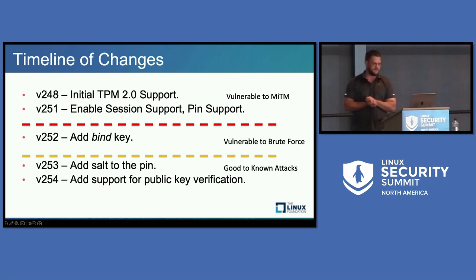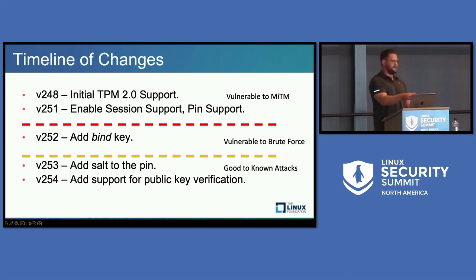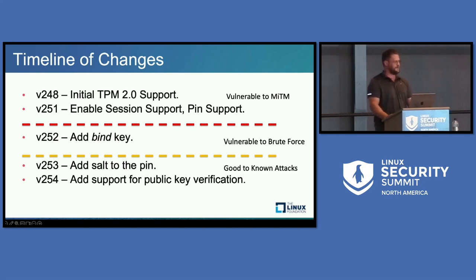Here's the timeline of changes — these are SystemD version numbers. Version 248 is where they had initial TPM 2.0 support with no attempts to do any type of encryption. Then they enabled session support. That's when I went to look at their implementation and noticed there was a problem. I worked on mitigation steps from version 252 through version 254. Most recent distributions — like Fedora 39 — are new enough where you're fine.